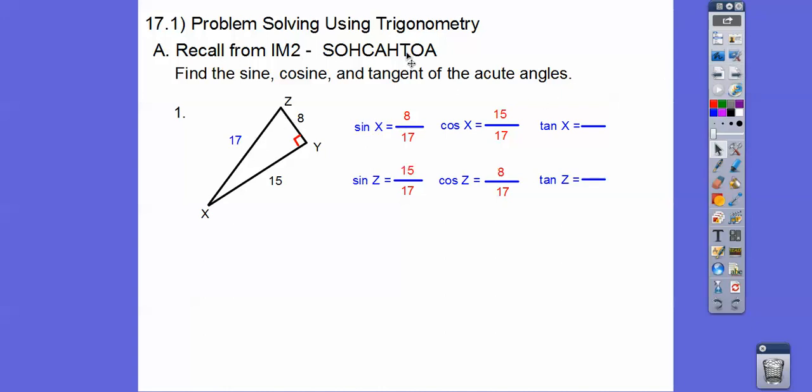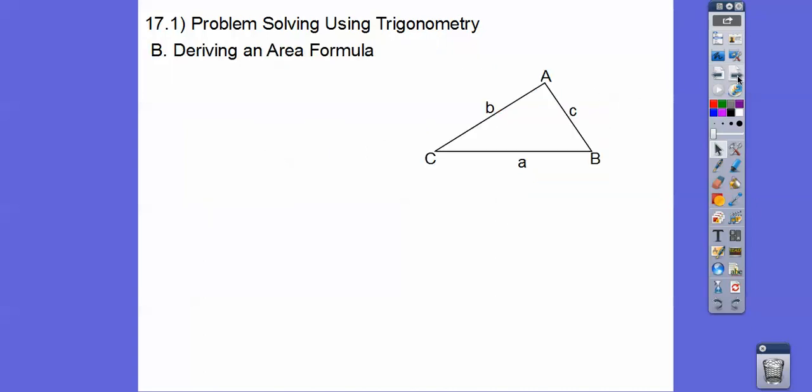And then the tangent doesn't have the hypotenuse in it. It has the opposite over adjacent leg. So the tangent of x is 8 over adjacent, 8 over 15, opposite over adjacent. The tangent of c is 15 over 8. Does that ring a bell? Hopefully.